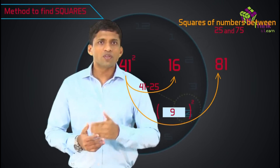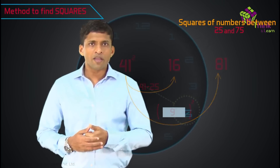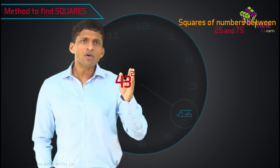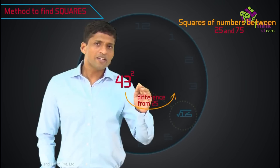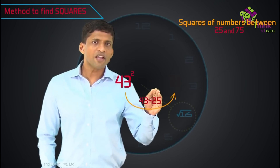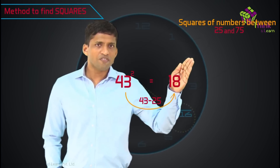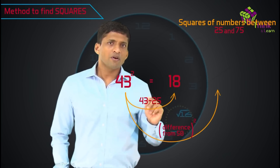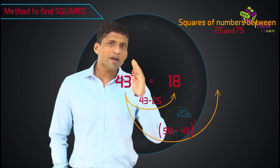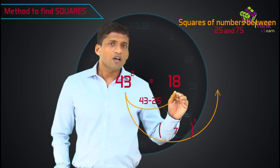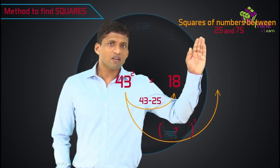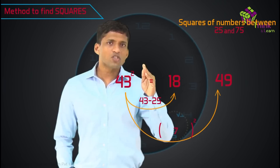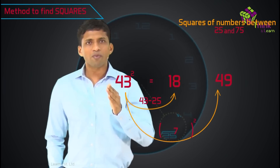Let's take one more example. To find 43 square: take the difference from 25, that is 43 minus 25, and you get 18 as the first two digits. Then take the difference from 50 — 50 minus 43 is 7. Square of that is 49, which you write as the last two digits. So 43 square is 1849. Very simple.